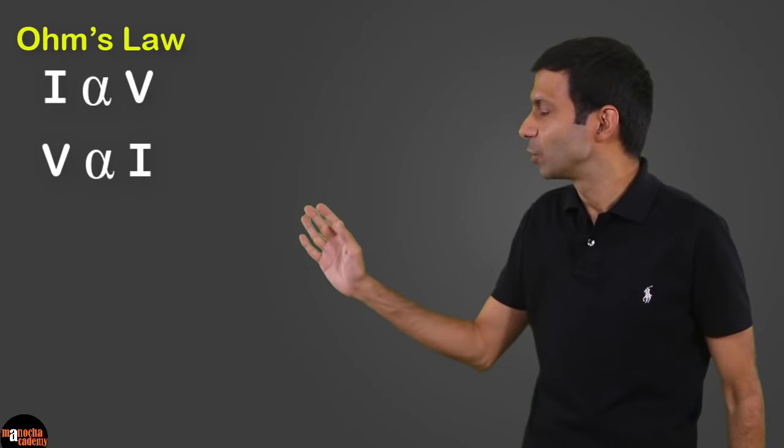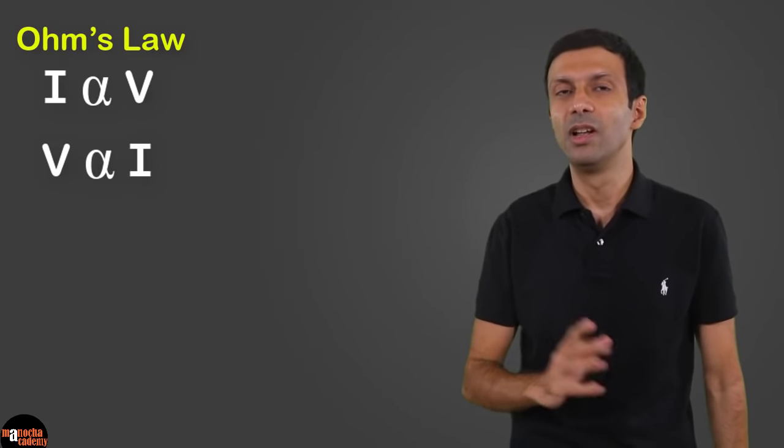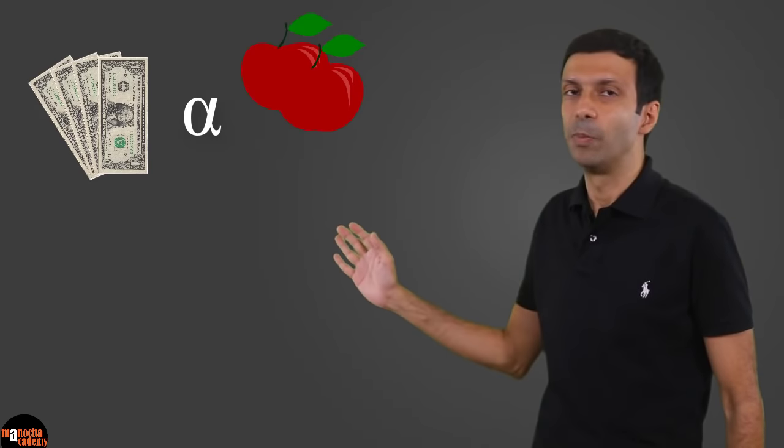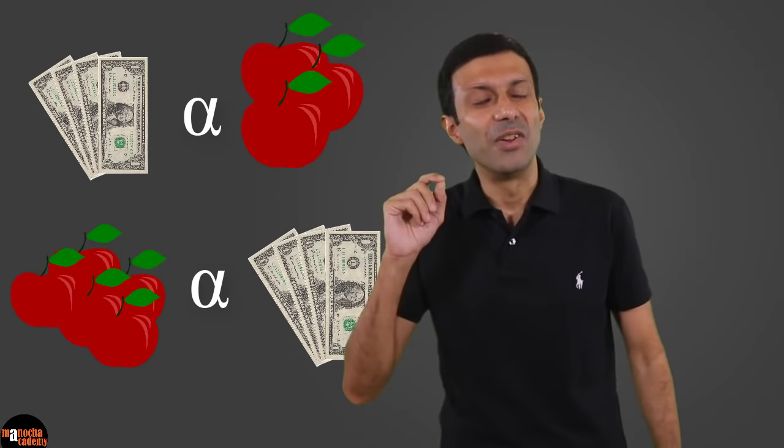We can also reverse this relation and write it as V is directly proportional to I — that is, the potential difference across a conductor is directly proportional to the current. To understand why we can reverse this, consider buying apples: your bill is directly proportional to the number of apples you buy, and we can also reverse it — the number of apples you buy is directly proportional to your bill. So we can always reverse a directly proportional relation.